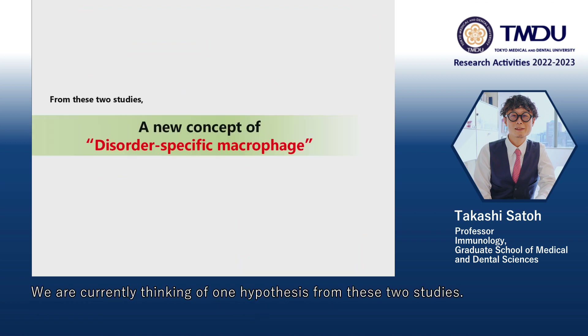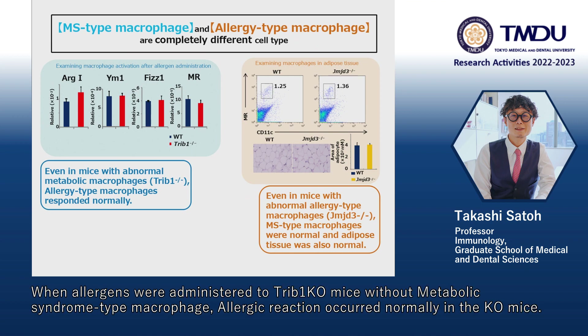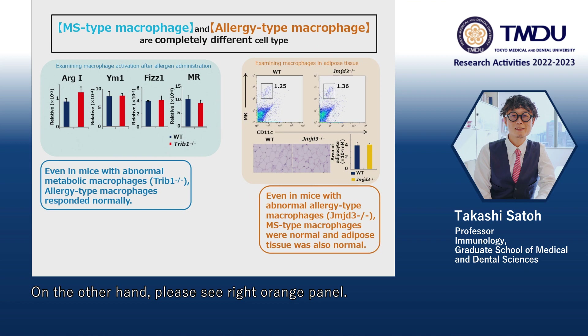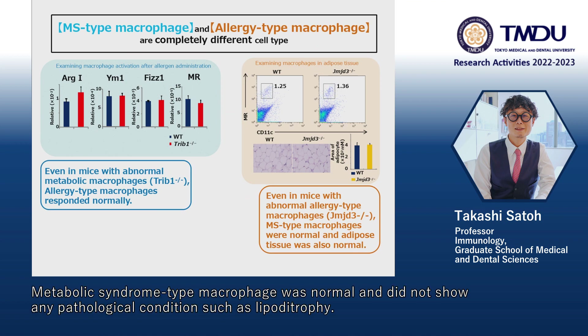We are currently thinking of one hypothesis from these two studies. Please see the left blue panel. When allergens were administered to TRIB1 knockout mice without metabolic syndrome-type macrophages, the allergy reaction occurred normally. On the other hand, please see the right orange panel. When we examined the adipose tissue of JMJD3 knockout mice that have abnormal allergy-type macrophages, metabolic syndrome-type macrophages were normal and did not show any pathological conditions such as lipodystrophy.